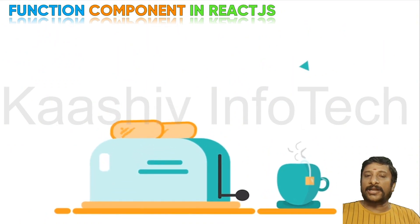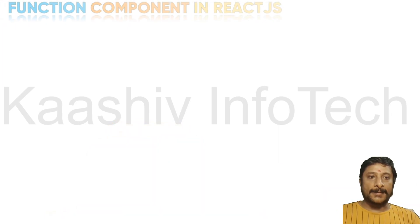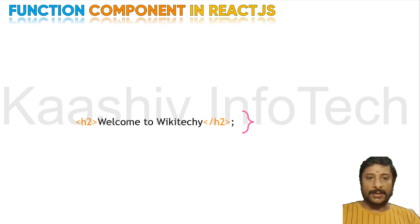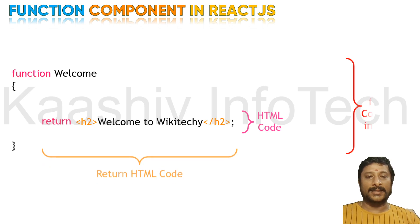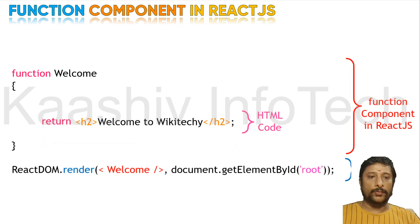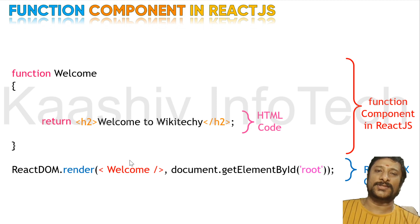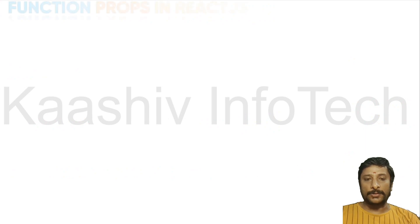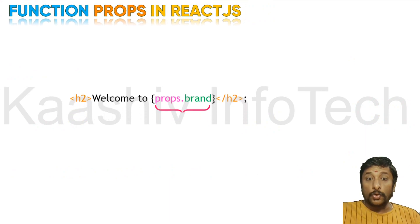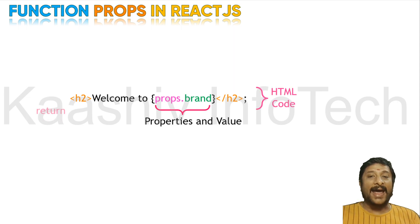Now let's look at the function component in React JS. I have written a simple function: function Welcome, which returns 'Welcome to Wikidiki' as HTML. This is a simple function component in React JS. Now I'm going to use props — the property props.brand — and return it. So the function should receive props as a parameter in order to use properties.